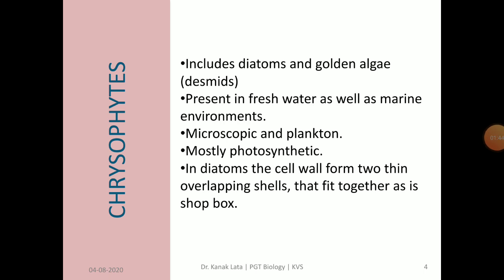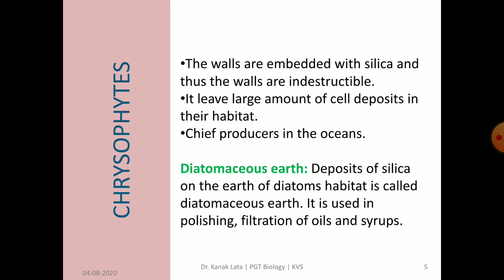Now let us see the different types of Protista. First is chrysophytes. Chrysophytes include diatoms and golden algae, that is desmids. They are present in both fresh and marine water. They are microscopic and planktonic, meaning they are present on the surface of water. Mostly they are photosynthetic. In diatoms, the cell wall forms two thin overlapping shells that fit together as in a soap box. The walls of diatoms are embedded with silica.